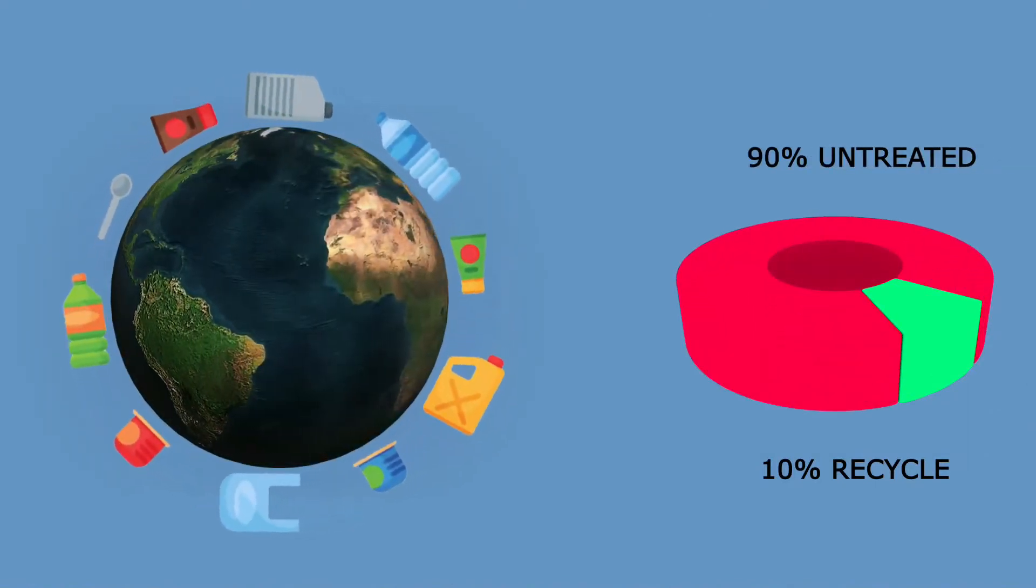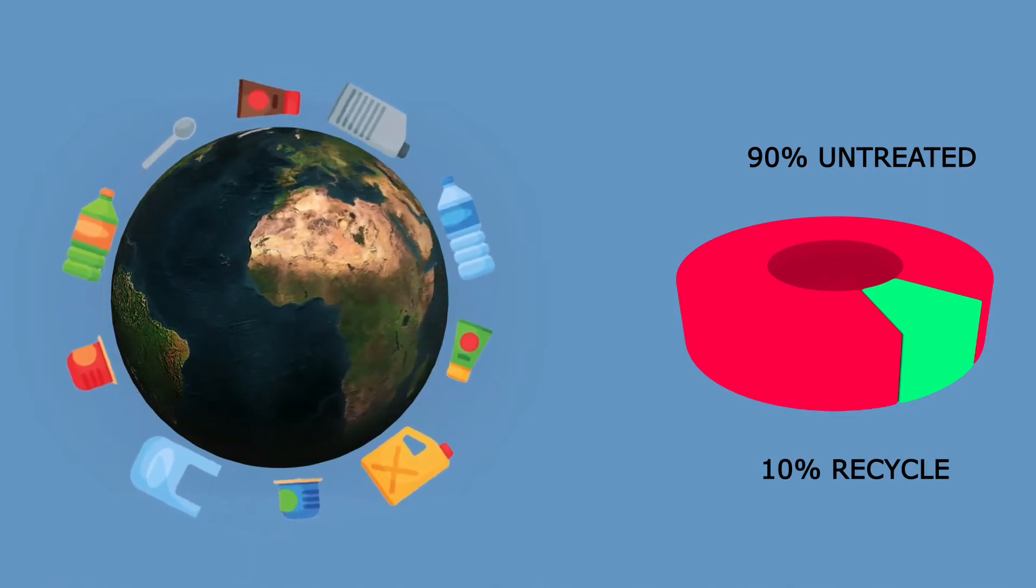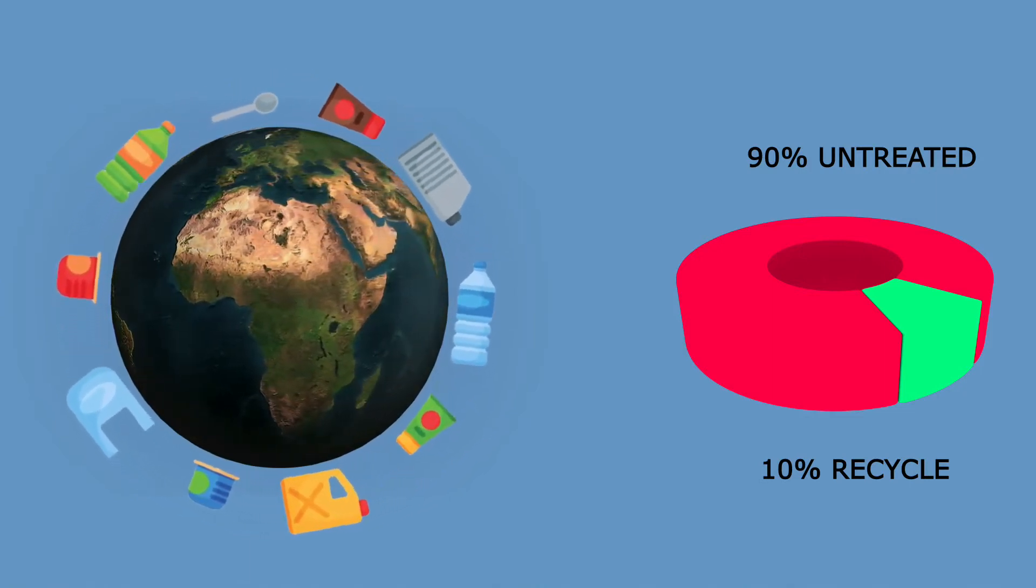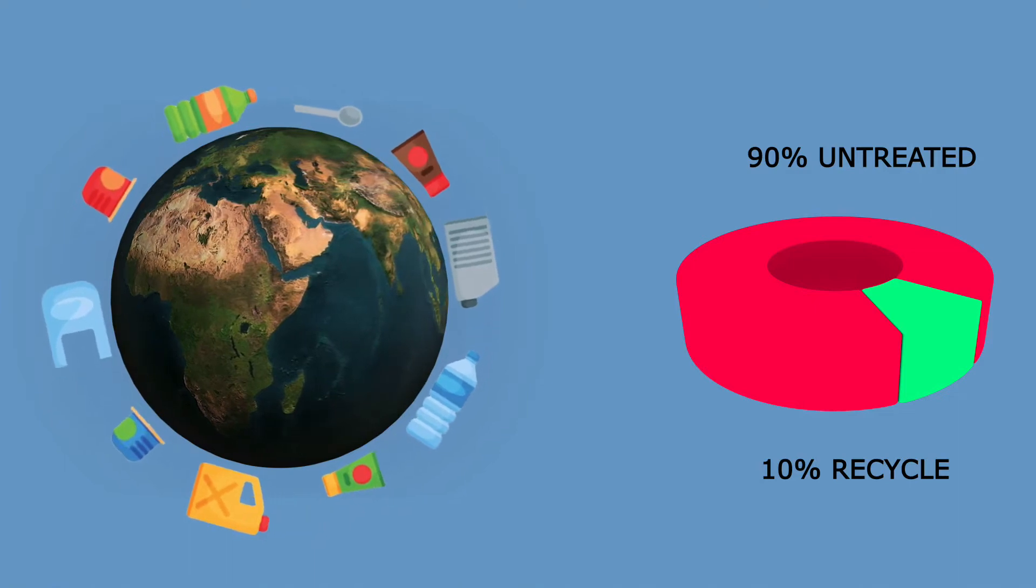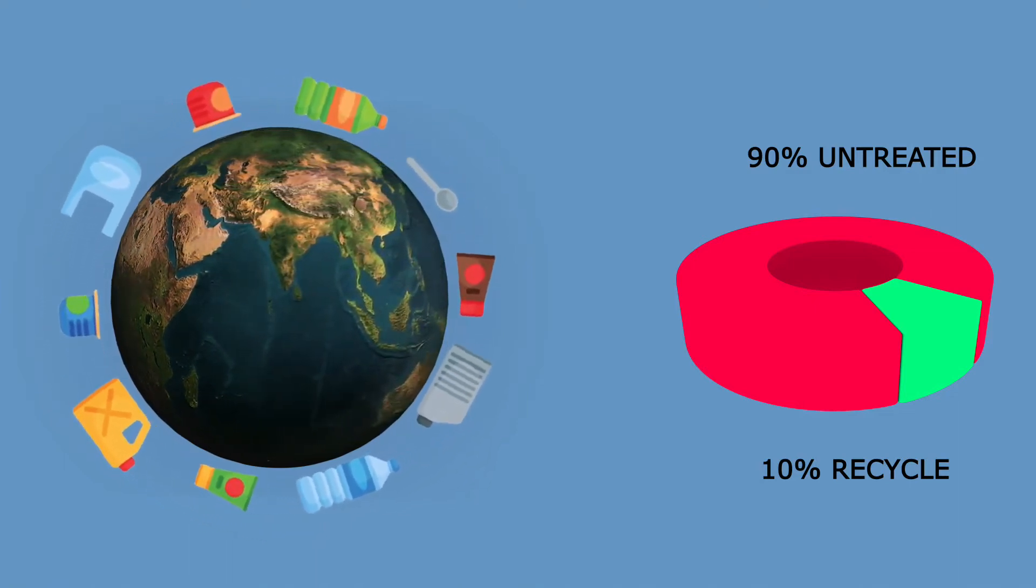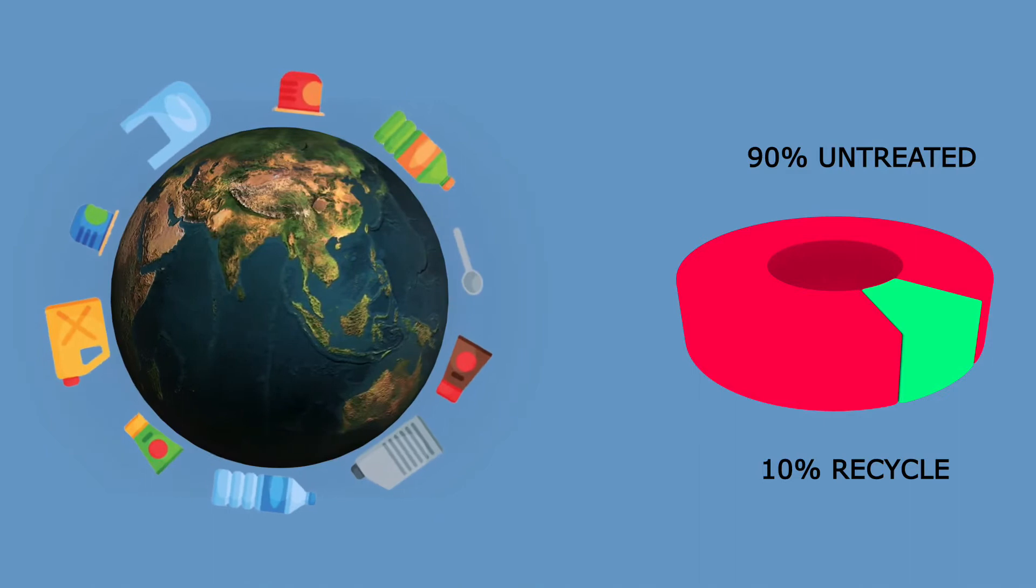Of the plastic that is simply trashed, an estimated 7 million tons ends up in the sea each year. There, it breaks down into smaller and smaller fragments over the years.